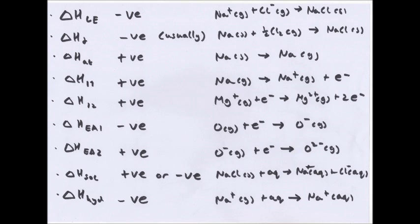First ionization energy is the enthalpy change accompanying the removal of one electron from each atom in one mole of gaseous atoms to form one mole of gaseous 1+ ions. The second ionization energy is the enthalpy change accompanying the removal of one electron from each ion in one mole of gaseous 1+ ions to form one mole of gaseous 2+ ions.